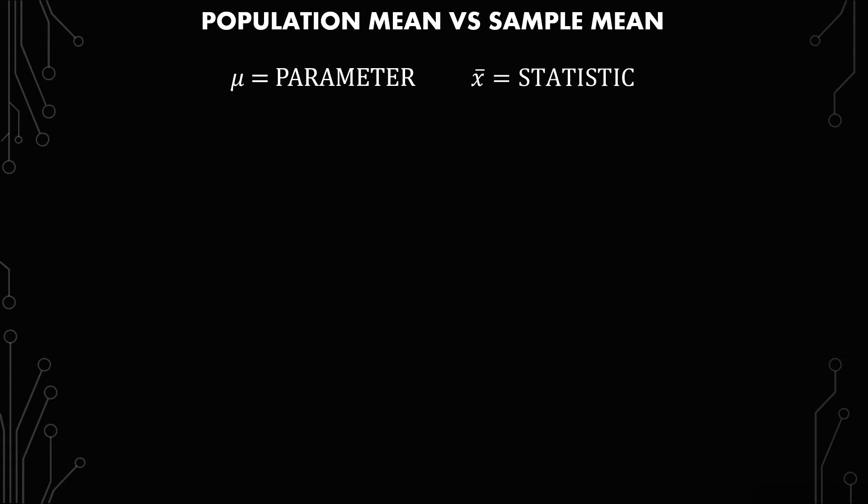In this video, I'm going to go over the difference between the population mean and the sample mean. The population mean, or mu, is called the parameter. It's an identity of what you're looking at — you can look at it as the gold standard. That's what you're comparing all the statistics you're coming up with when you're approximating.